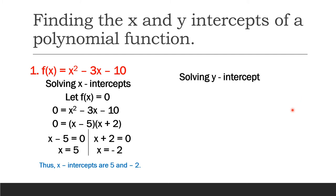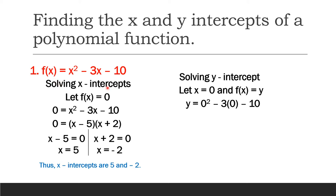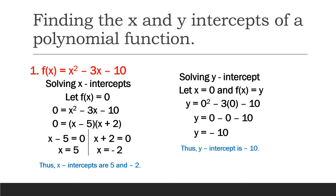Next is solving the y intercept. To solve for the y intercept, we let x be equal to 0 and change f(x) to y. The expression becomes y = 0² - 3(0) - 10. Since 0 squared is 0 and 3 times 0 is 0, we get y = 0 - 0 - 10, so y equals negative 10. Thus, the y intercept is negative 10.